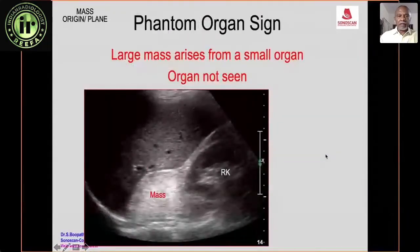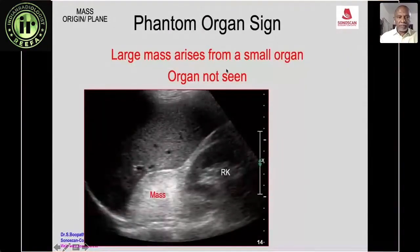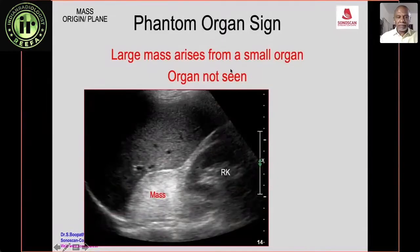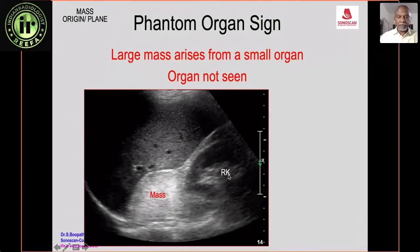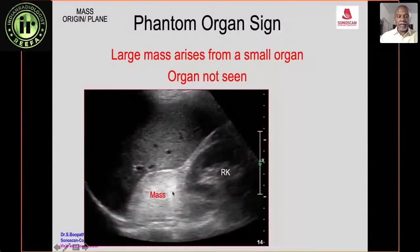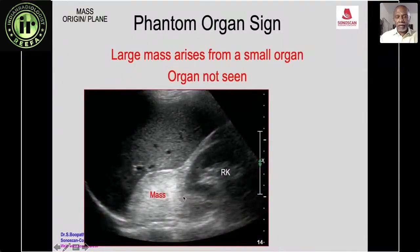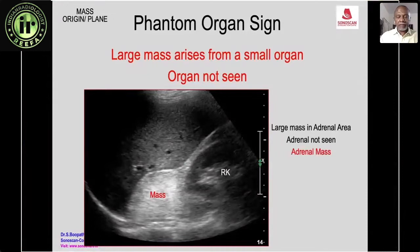The phantom organ sign occurs when a large mass arises from a small organ and the organ itself is no longer visible. For example, in the right adrenal area a mass is seen and the adrenal cannot be identified separately — this allows diagnosis of an adrenal mass.